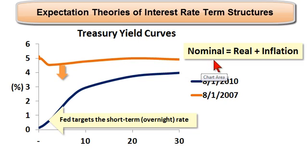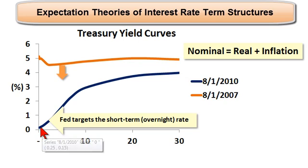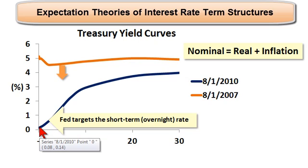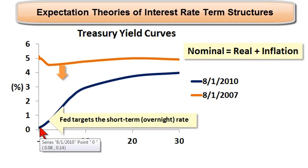First, it's nominal yields, meaning there are real yields plus an inflation expectation. And secondly, we want to keep in mind that the Federal Reserve really only targets and manipulates the very short-term rate — the overnight rate, the Fed funds rate. They can push this rate up by restricting the money supply, and they can pull this rate down, which they've done more recently, by increasing the money supply by purchasing securities.